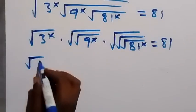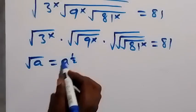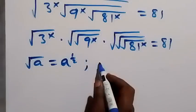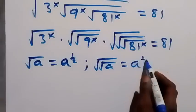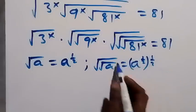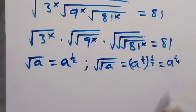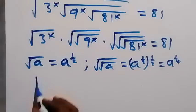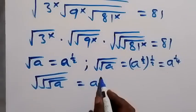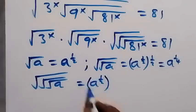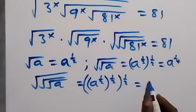When we have square root of a, this is the same as a raised to power one-half in indices. When we have square root of square root of a, this gives a raised to power one-half, then raised to power one-half again, and since the powers multiply, half times half gives a raised to power one-quarter. When we have square root of square root of square root of a — three times — this gives a raised to power one-eighth.